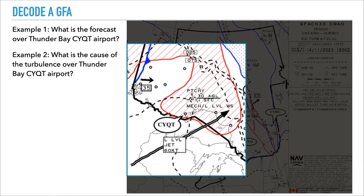The next question asks: what is the cause of the turbulence over Thunder Bay Airport? We just talked about it — it is due to the low-level jet.